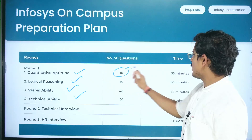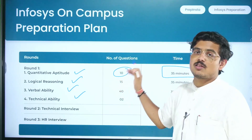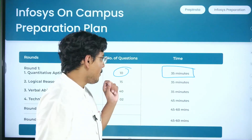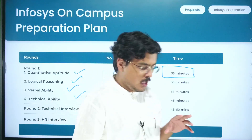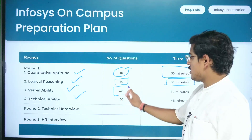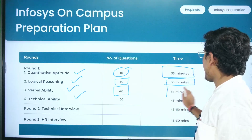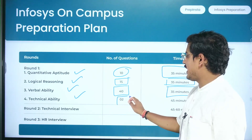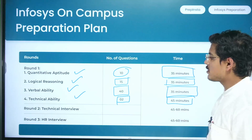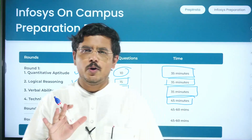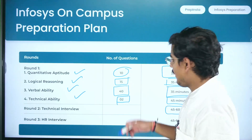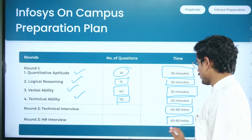In quants, you have 10 questions in 35 minutes. The number of questions are generally less but the time is more, so the difficulty of questions would be substantially higher. In logical reasoning, 15 questions in 35 minutes. Then verbal ability has 40 questions in 35 minutes — generally easy. Technical ability has two questions in 45 minutes, so around 22.5 minutes per single question. Then you have a technical interview lasting 45 to 60 minutes, followed by an HR interview also lasting 45 to 60 minutes.